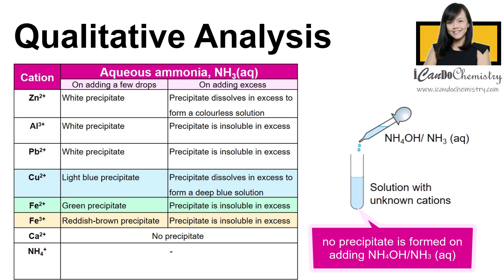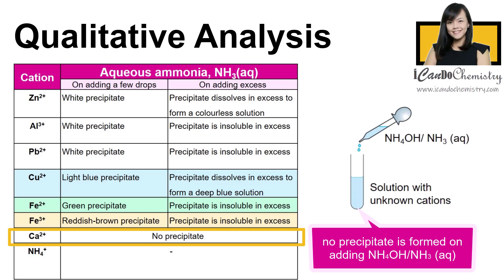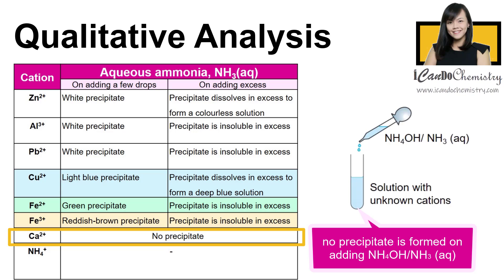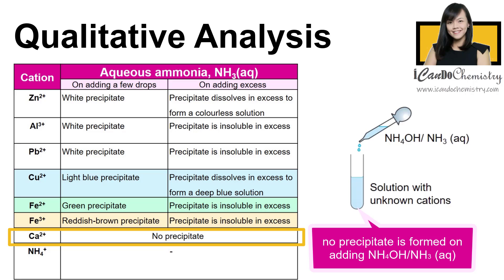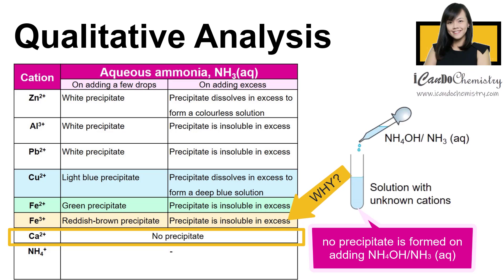So if we add aqueous ammonia into a solution to test for the cations and no precipitate is formed, then we can confirm that the particular cation must be the calcium ion. Calcium ions do not form a precipitate with aqueous ammonia.